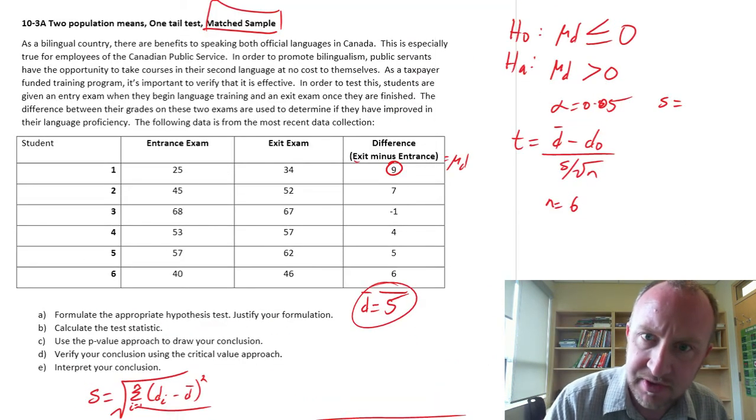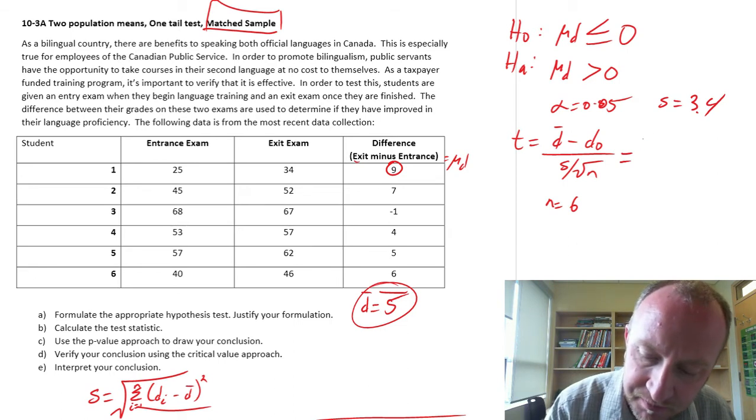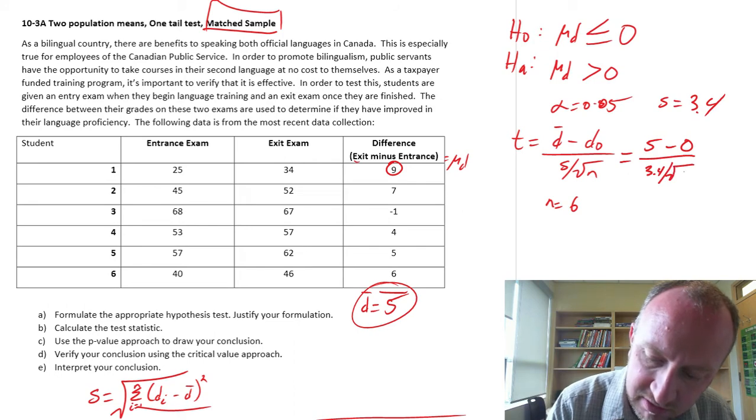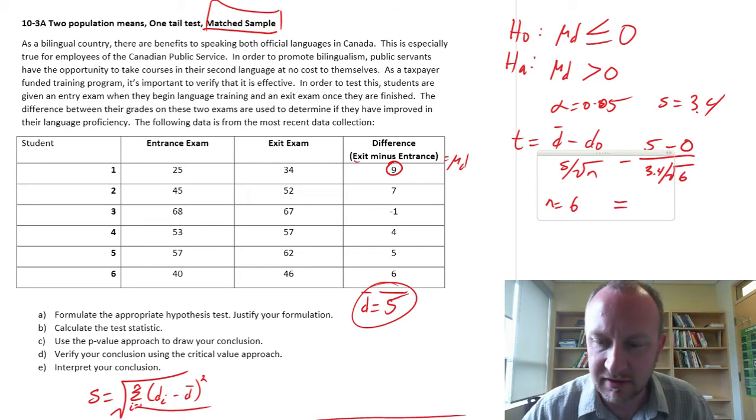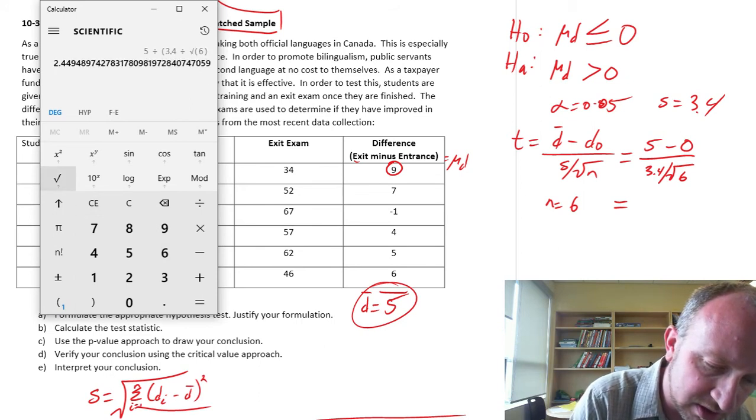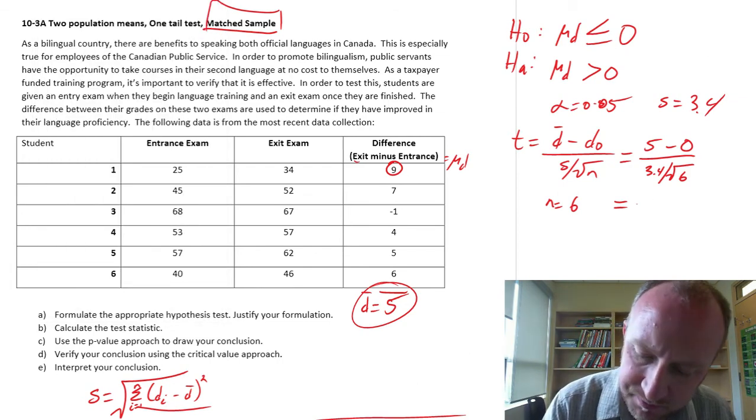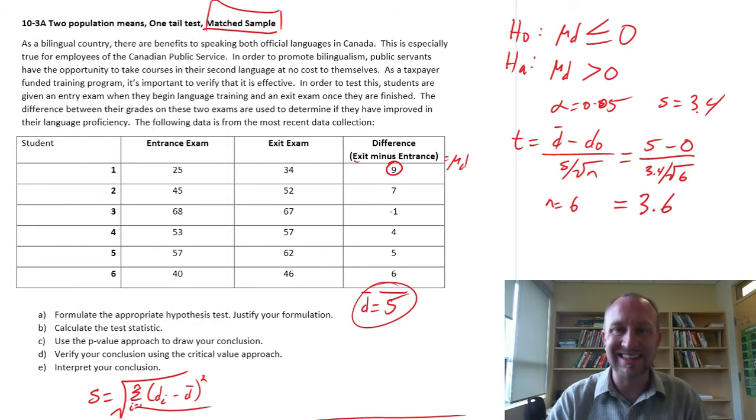Okay, so I'll come back up here, and this is 3.4. Now we've got all of the ingredients to calculate our test statistic. So this average difference was 5, our hypothesized difference is 0, divided by 3.4 over the square root of 6. And so what is that going to be? 5 divided by 3.4 over 6, square root of that, equals 3.6. So there's our test statistic.